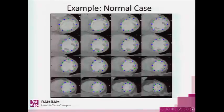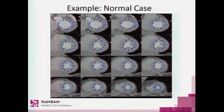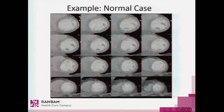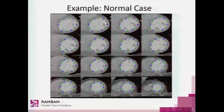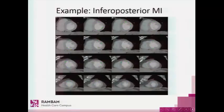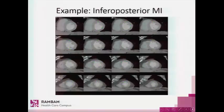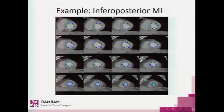This is an example of a normal case. We see that the tracking of the myocardium is very good, and also the contraction is good. This is an example of an abnormal case. The tracking of the myocardium is also very good, but we see hypokinesis of the infero-posterior wall.